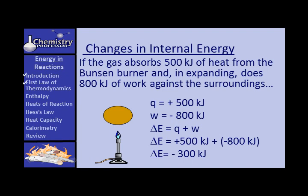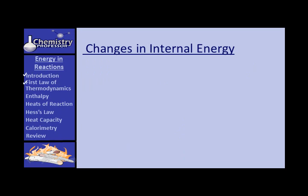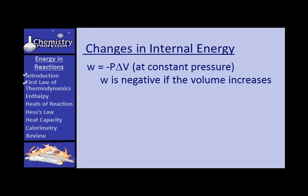The gas lost energy to the surroundings as it pushed back, losing more energy than it gained from heat. Therefore the change in energy is less than Q. Work equals negative P times delta V at constant pressure — we're only going to be dealing with constant pressure.